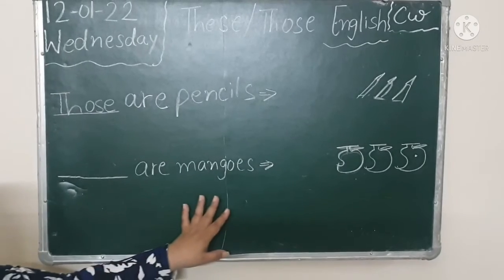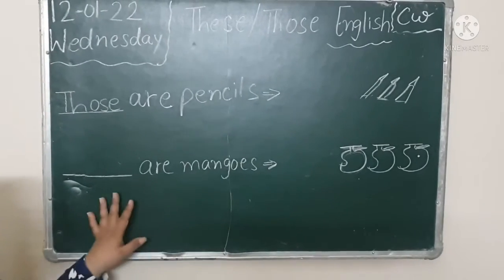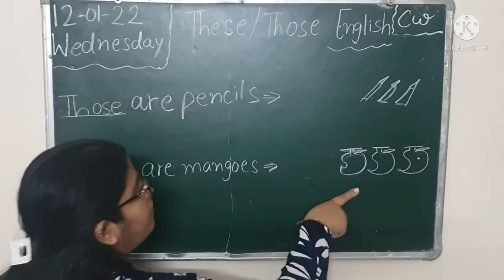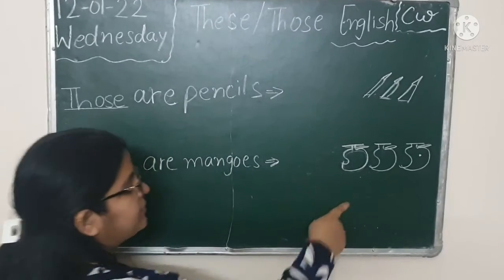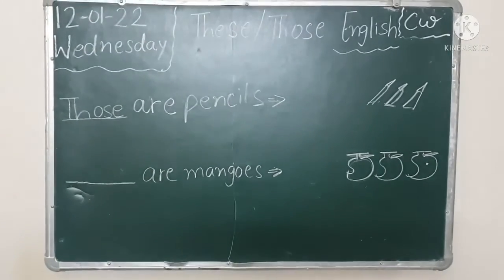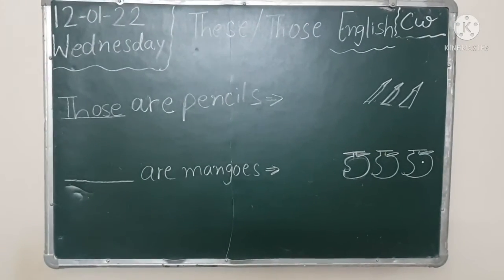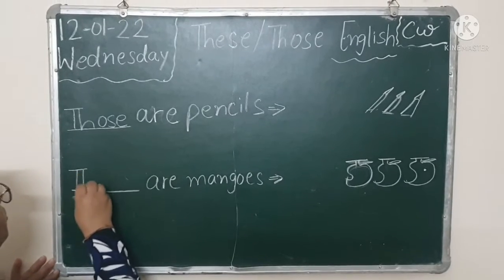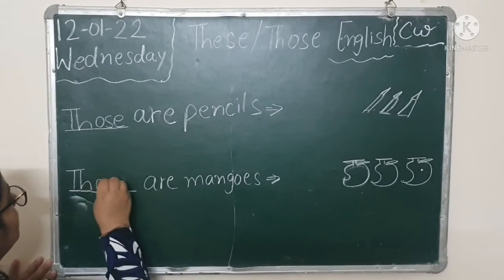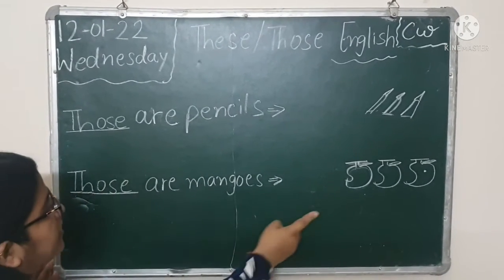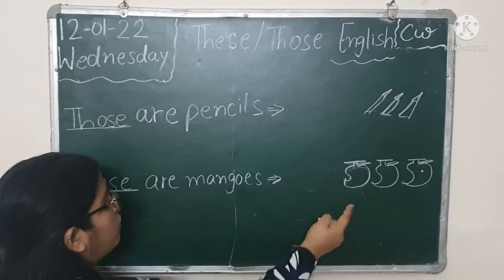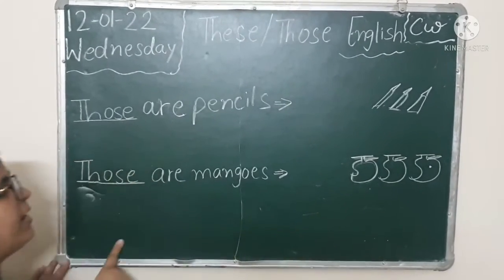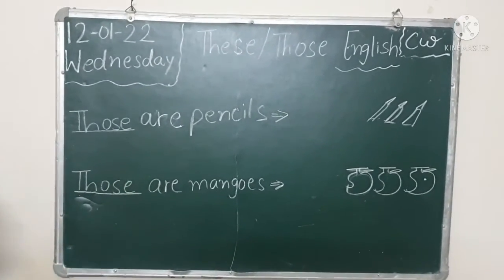Dash are mangoes. Mangoes are far from us. So we write here 'those'. Those are mangoes. Mangoes کہاں ہے؟ دور ہے. تو دور کے لिए हम 'those' लिखते हैं.